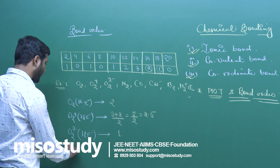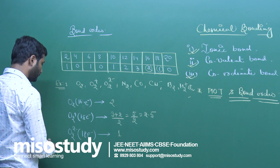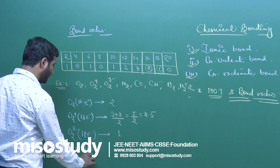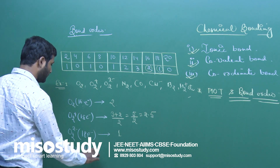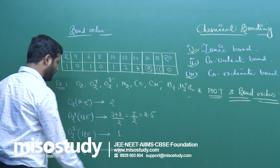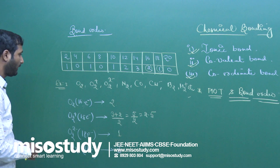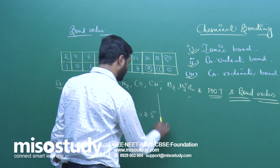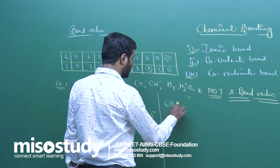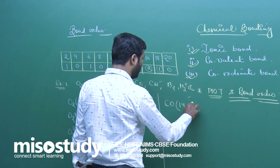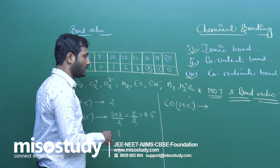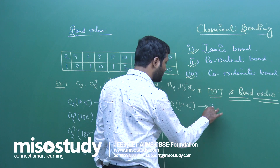The next one is N2. N2 is a 14-electron system. Below 14 we have 3, so the bond order here is 3. Now CO: 8 + 6 = 14, that is a 14-electron system. Below 14 that is 3, so bond order here is 3.